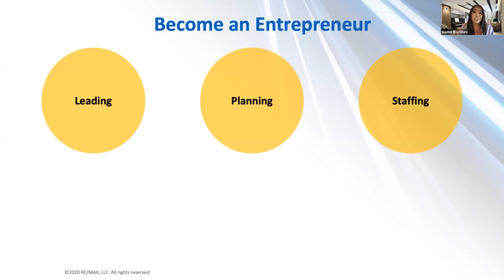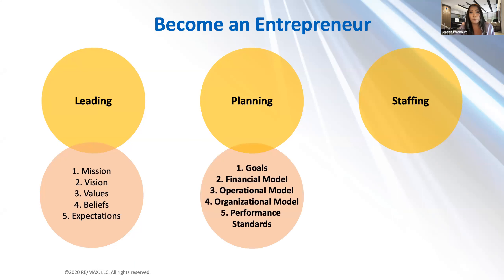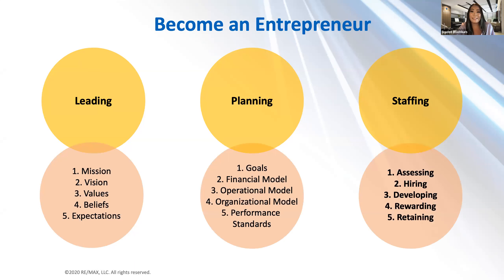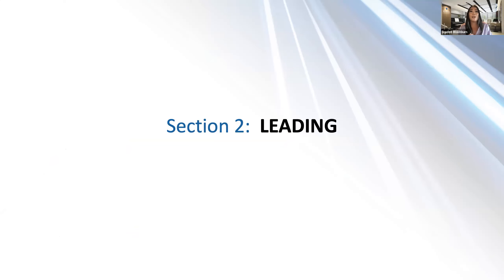What we'll cover in the next three sections: when it comes to leading, we'll talk about creating a mission, vision, values, beliefs, and expectations for your team — the foundation. We'll talk about planning: establishing goals, three models — financial, operational, and organizational — and setting performance standards. And lastly, we'll talk about staffing: assessing, hiring, developing, rewarding, and retaining staff members. Let's dive into section two: the leading discipline.